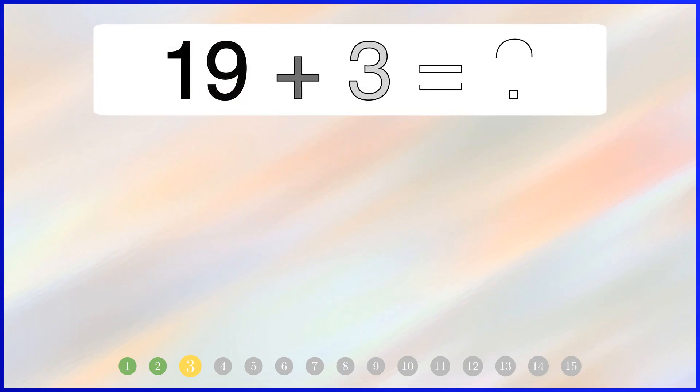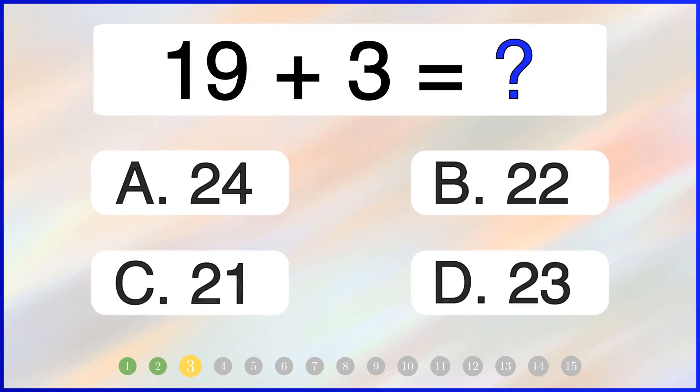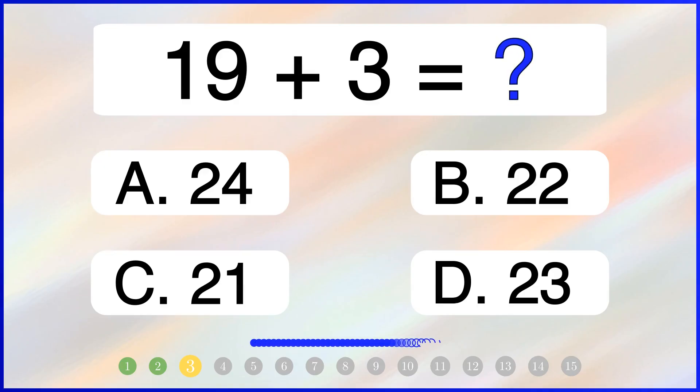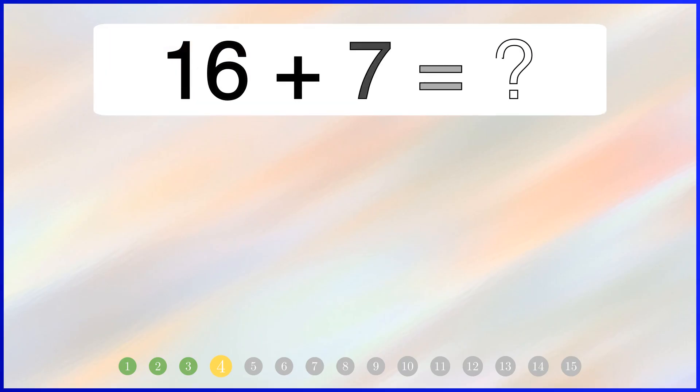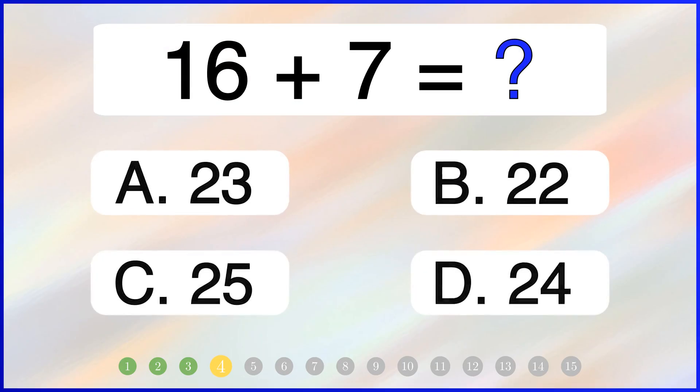Add 19 and 3. The correct answer is 22. 16 plus 7 equals? The correct answer is 23.